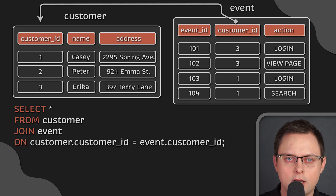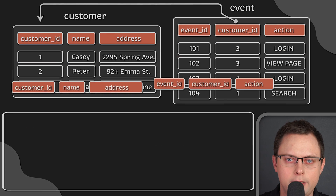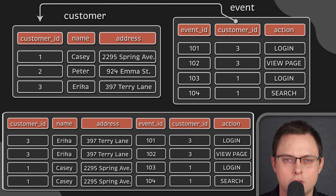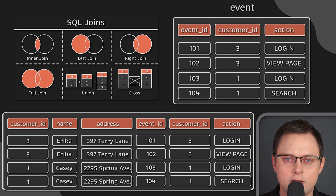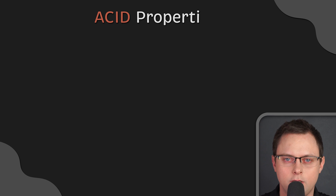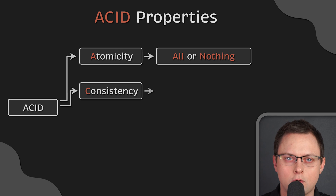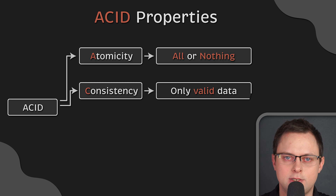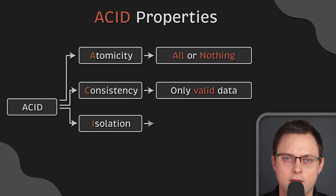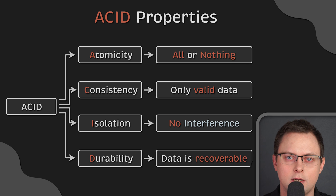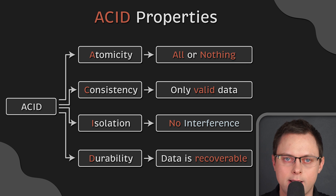If you want to get all the customers who are active, meaning they performed at least one action, you can use a join. Another important feature provided by most relational databases is ACID transactions. This means all changes to data are performed as if they are a single operation. If at least one task fails, the whole transaction is rolled back.